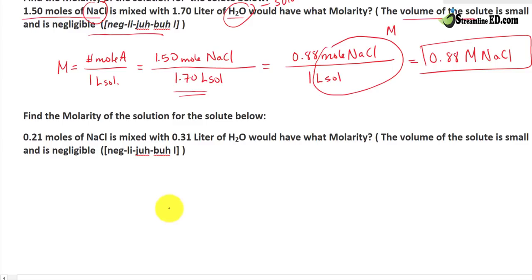Let's try another problem. In this case, find molarity of the solution for the solute below. We have 0.21 mol of NaCl, again salt. It's mixed with 0.31 liter of solution. Again, we don't have that 1 liter of solution, because sometimes we don't use exactly 1 liter of solution. But it's easy, we just simplify the fraction.